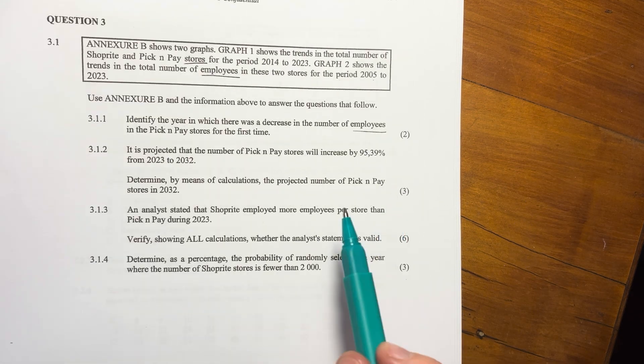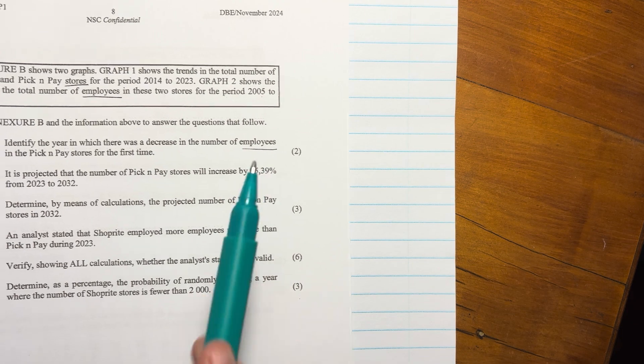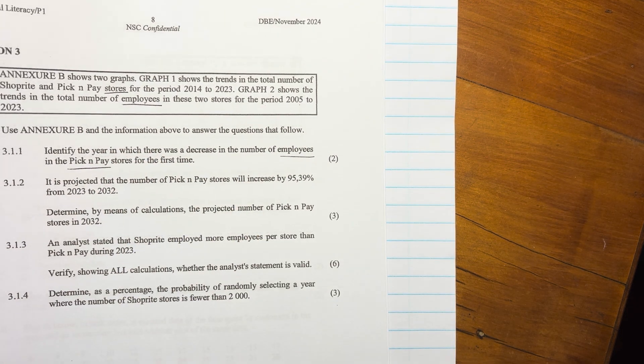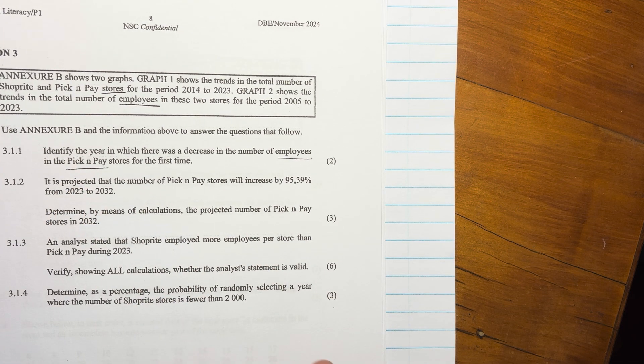So let's say for that question, 3.1.1, make sure that you write your answers nicely. So question three, 3.1.1 and the answer is going to be 2015. And you can just leave it at that. You don't have to give a whole explanation. The biggest thing there is that you notice that one, it was employees and two, it was Pick n Pay. So it wasn't ShopRite and it wasn't the number of stores. It was just making sure that you comprehended what was being asked.